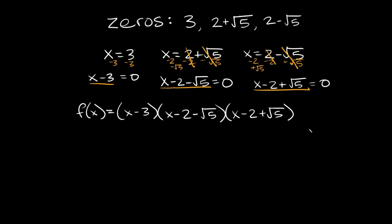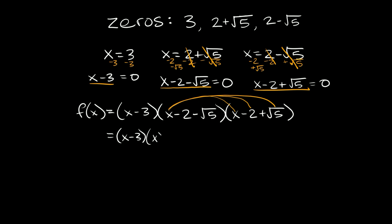Whether you're doing the distribution method or grouping, both methods are exactly the same up to this point — this is where they change a little bit. We're going to stick with distributing. Let's multiply these two irrational binomials together first, and bring the (x minus three) straight down. We distribute one set of parentheses into the other. First term: x times x equals x squared, then x times negative two is negative two x.